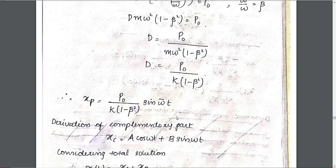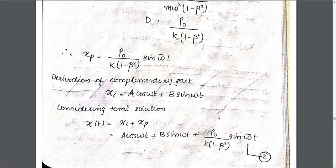This is the solution. We substitute xp as d * sin(omega_bar * t), which becomes p0 divided by k times (1 minus beta_squared) times sin(omega_bar * t). The complementary part xc equals a * cos(omega * t) plus b * sin(omega * t). The total solution is the complementary part plus this particular solution.